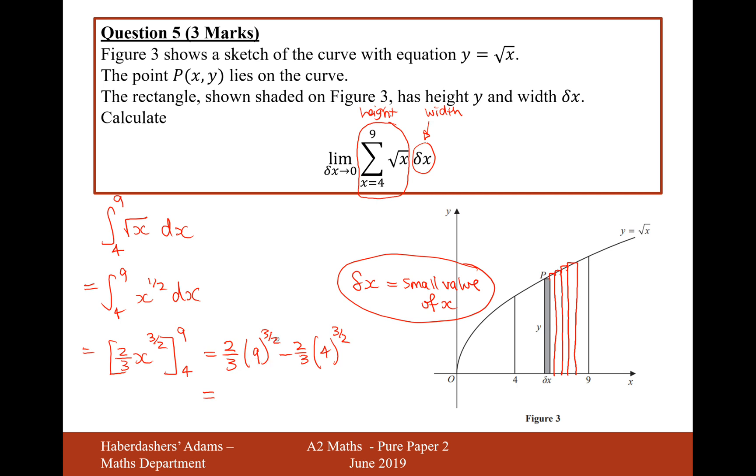9 rooted will be 3, and then to the power of 3 would be 27, times 2 would be 54 over 3, and then minus 4 rooted would be 2 to the power of 3 would be 8. 8 times 2 is 16 over 3.